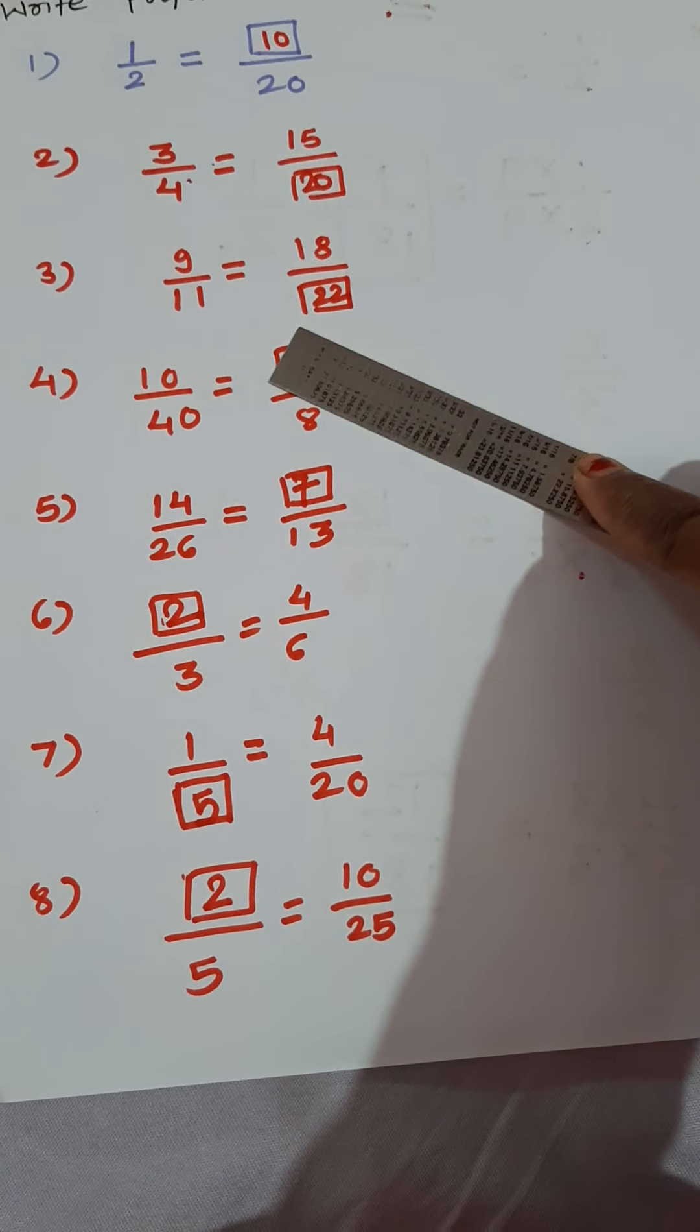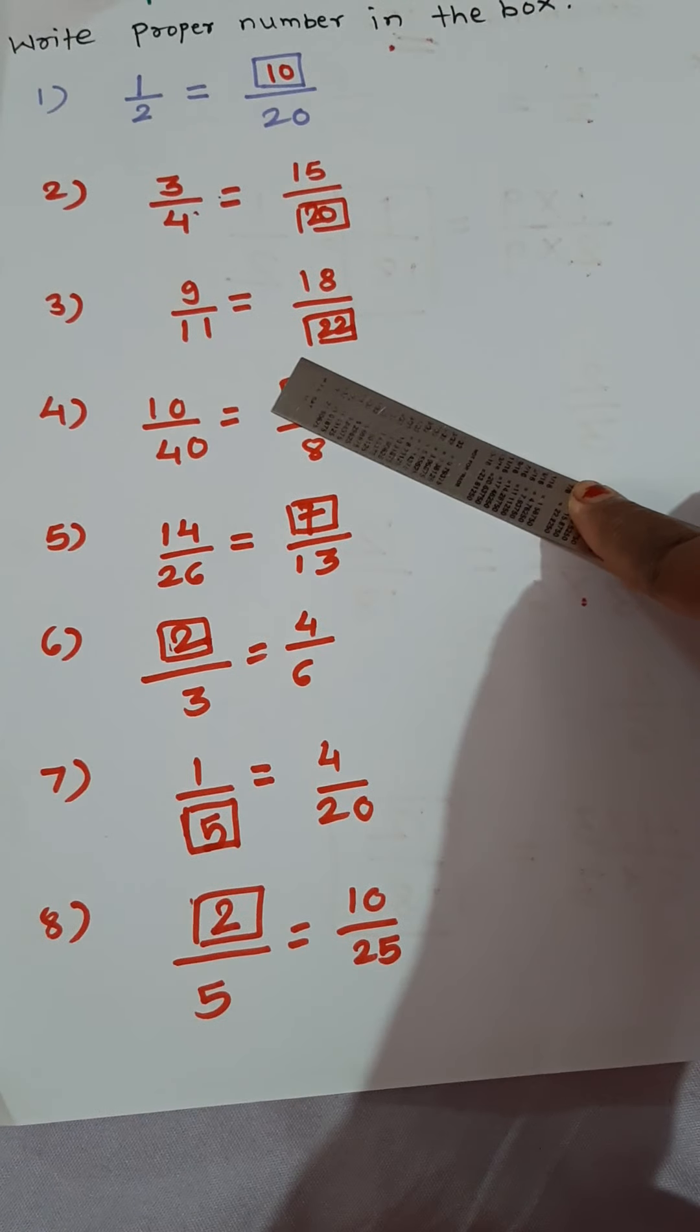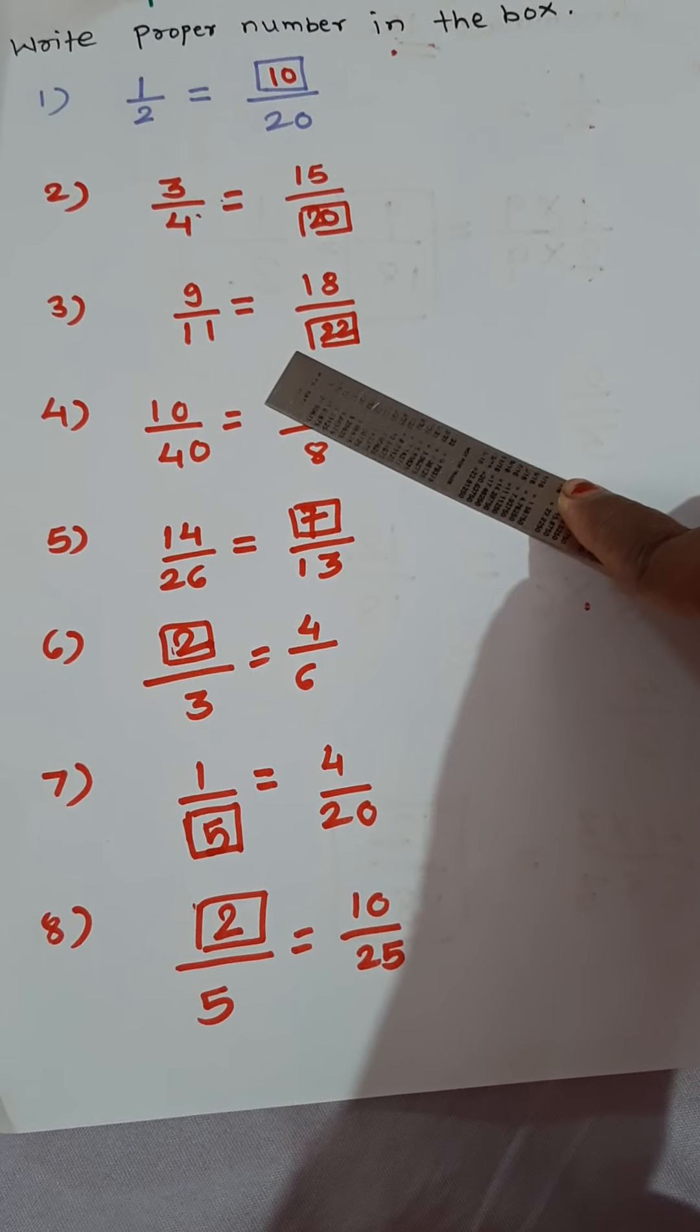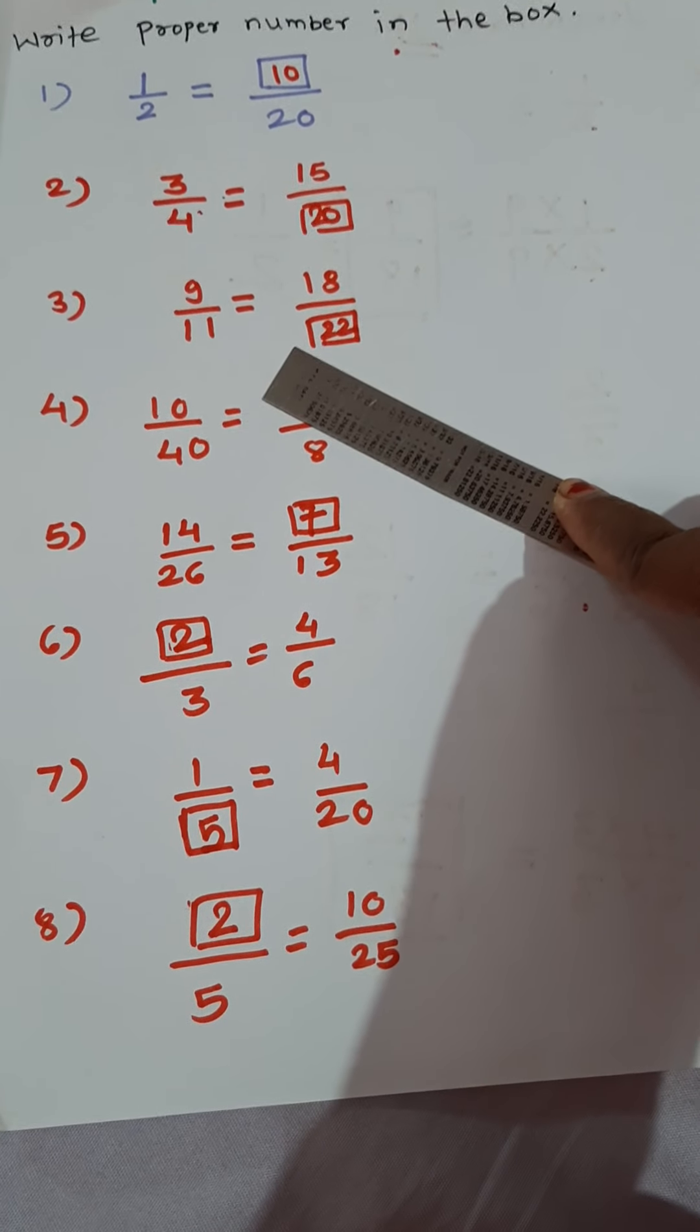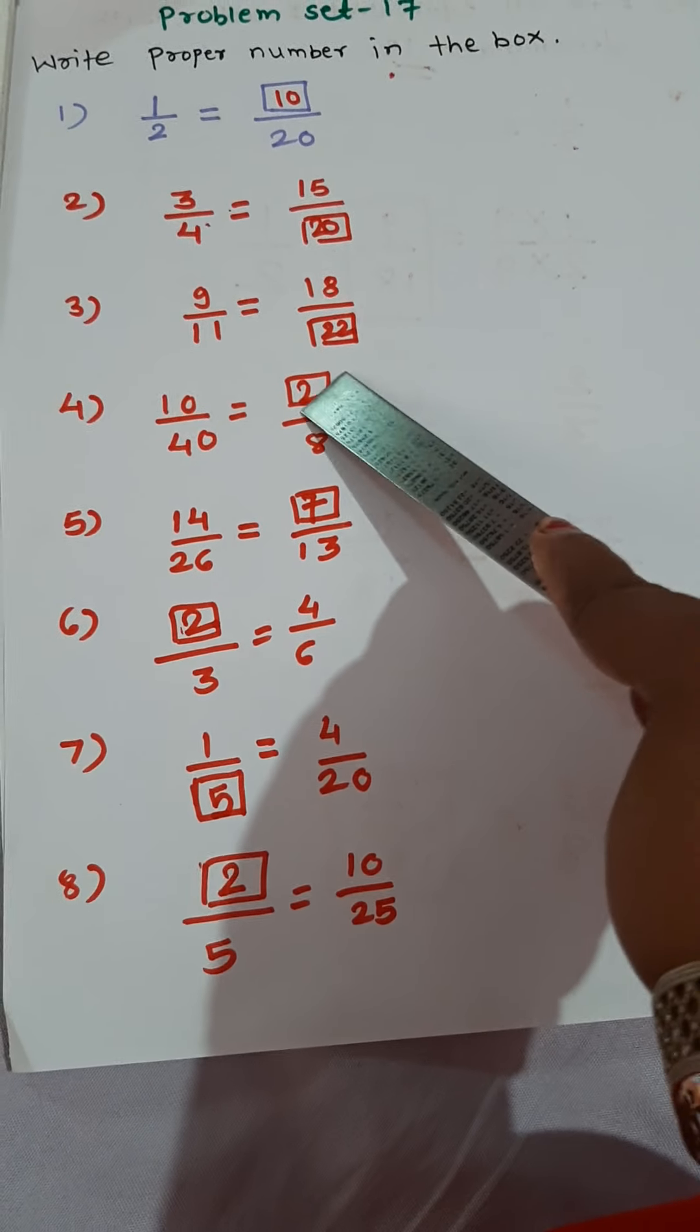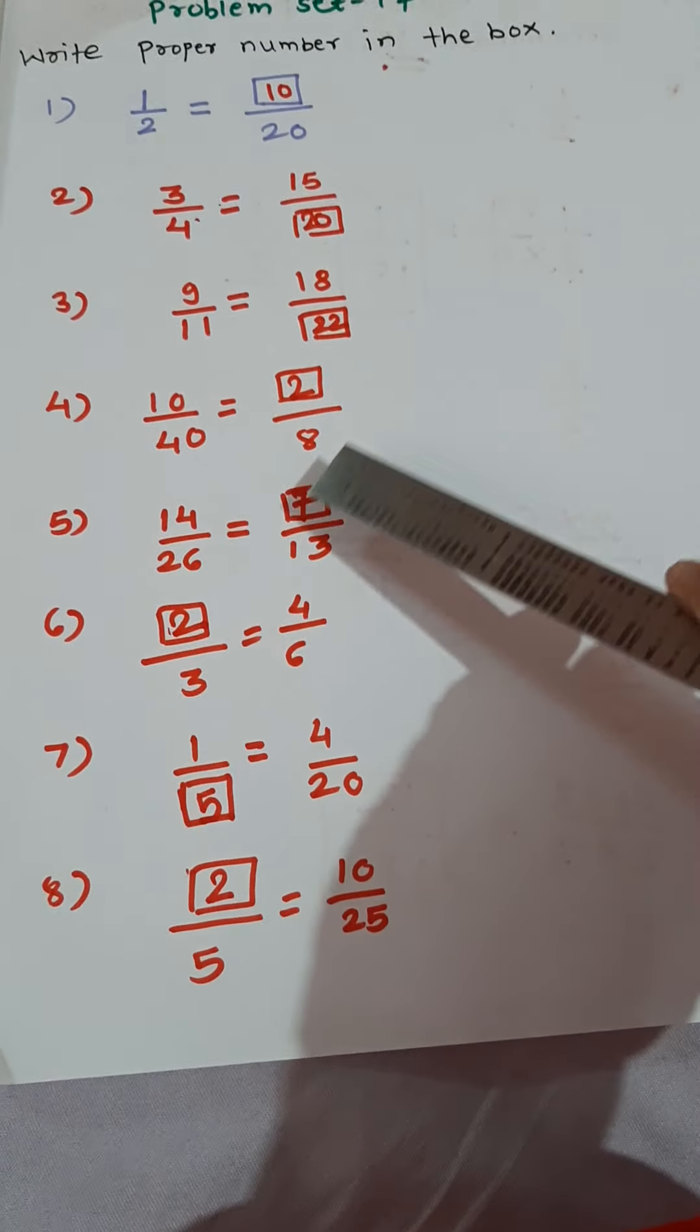Similarly here, 10 upon 40 is equal to dash upon 8. 8, 5's are 40. Then how many 5's are 10? 2 5's are 10. So here 2, 2 5's are 10.